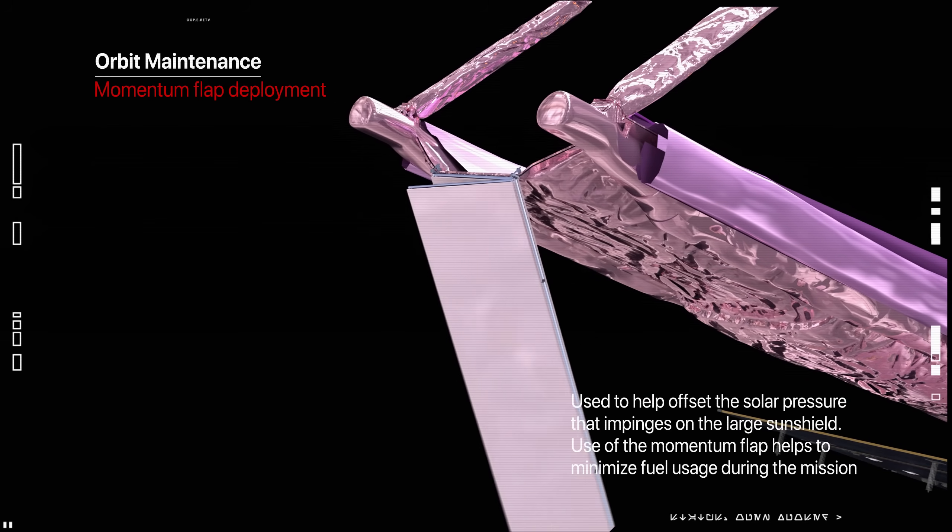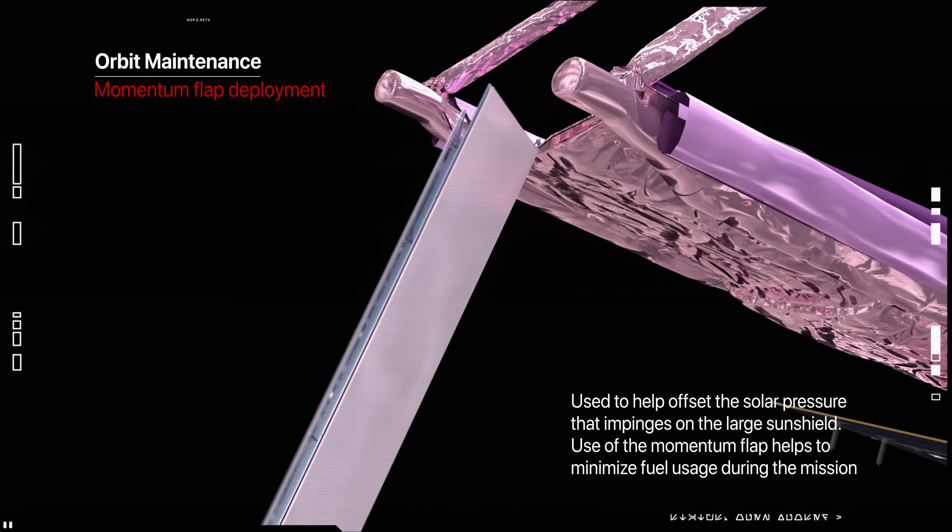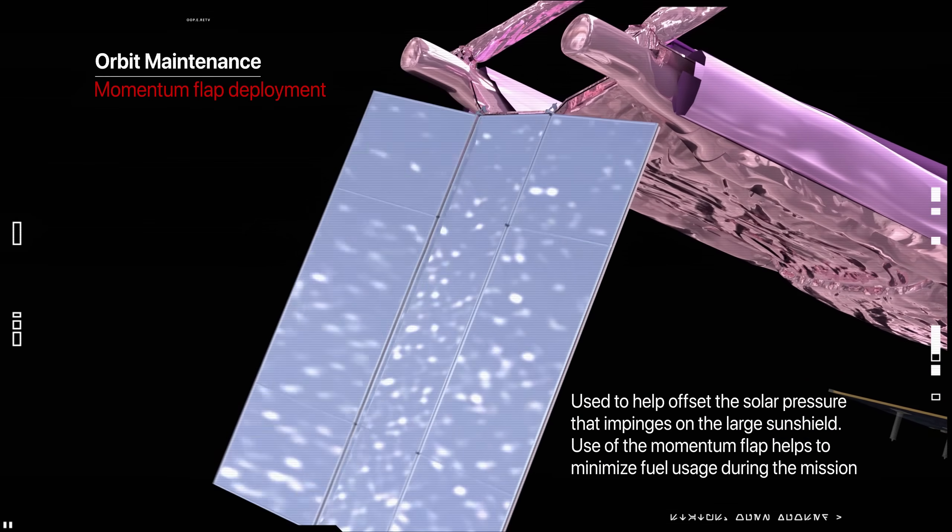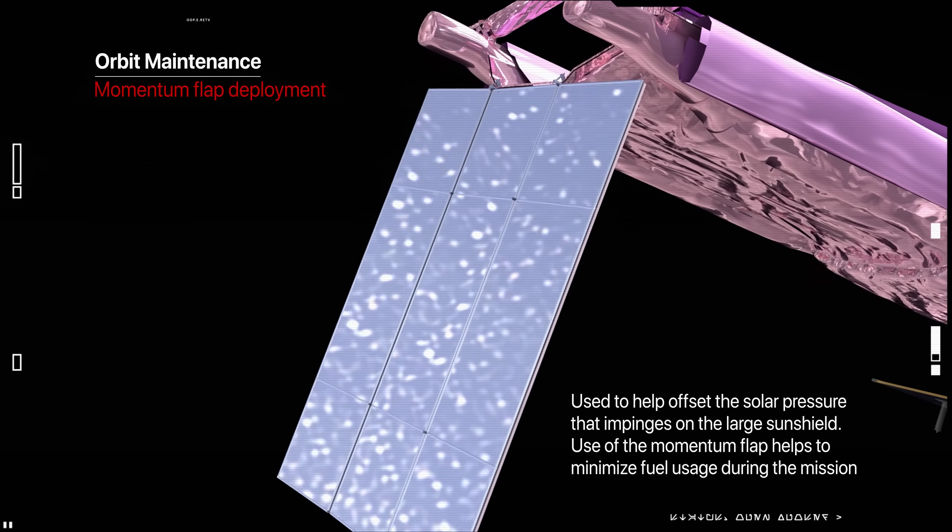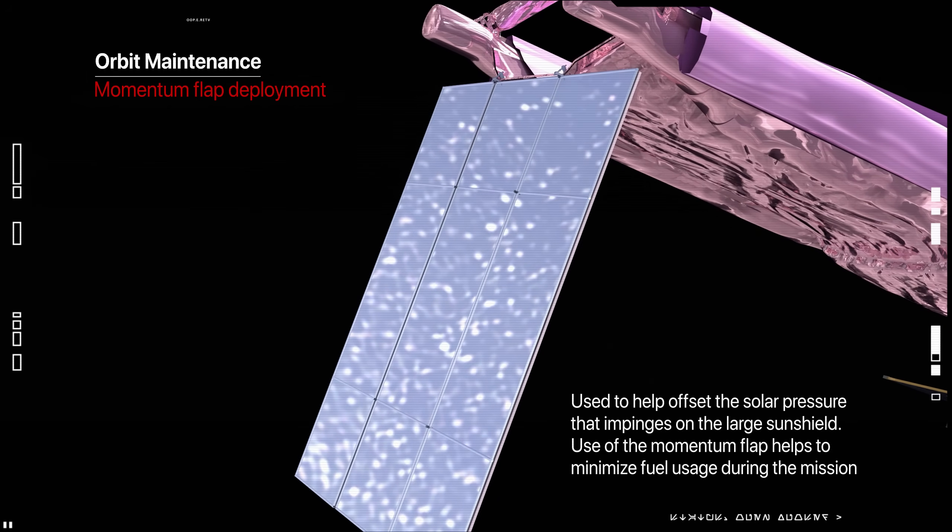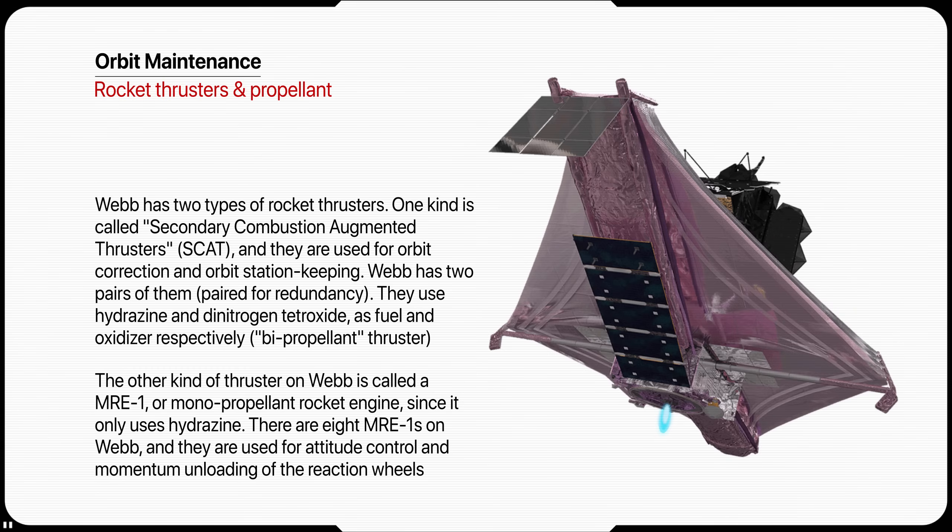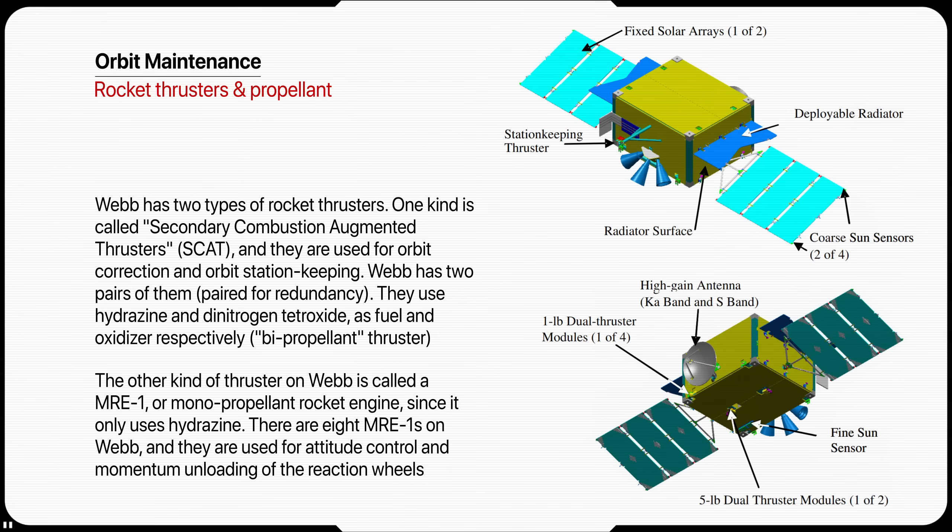Accurate orbit determination will require daily tracking measurements over a period of 19 days, so station-keeping will be performed every 21 days. Orbit perturbations along the Sun-L2 axis have the greatest impact on orbit stability.